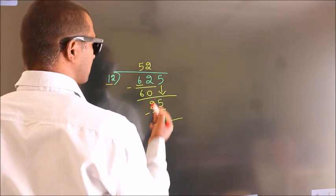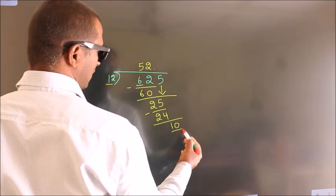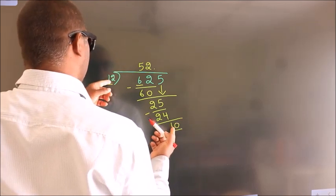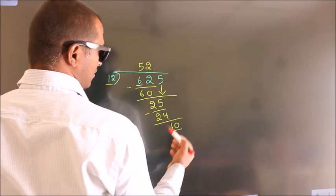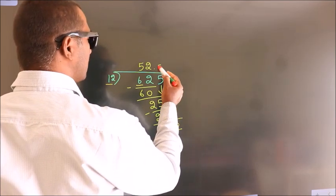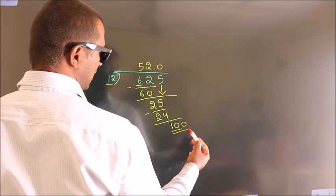So what we do is put a decimal point and add a 0, making 10. 10 is still smaller than 12, so we add one more 0 here. This gives us 100.